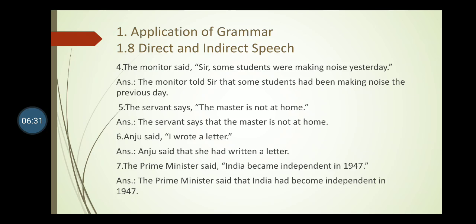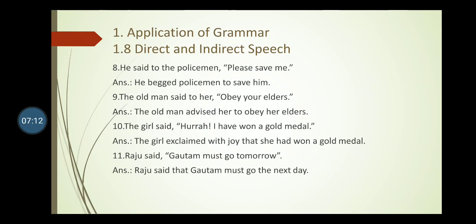Simple past 'wrote' changes to past perfect 'had written'. Answer: Anju said that she had written a letter. Sentence seven: The prime minister said, 'India became independent in 1947.' 'Said' is past tense. 'Became' — V2 simple past — changes to past perfect 'had become'. Answer: The prime minister said that India had become independent in 1947.